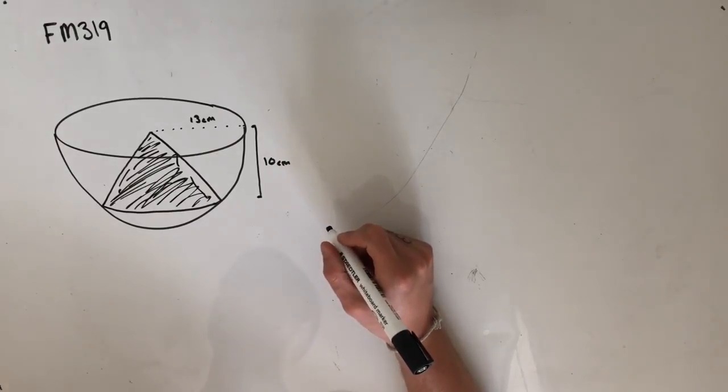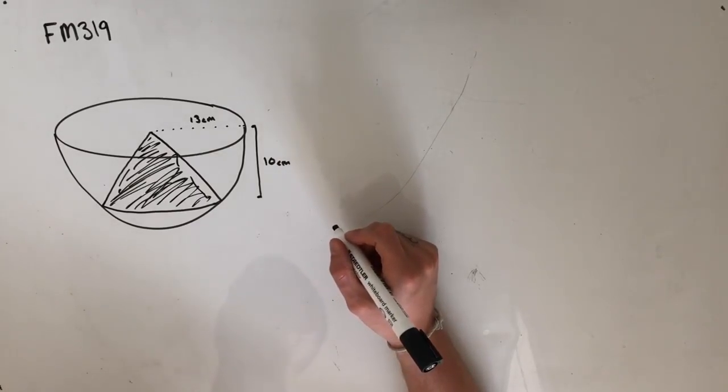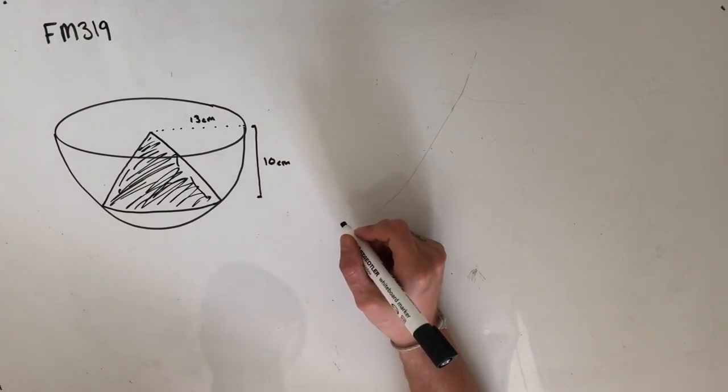Hey guys, welcome to question FM 319 of the Further Maths 4 to 5 study guide. This question reads: a hemispherical bowl of radius 13 centimetres is shown in the diagram below.